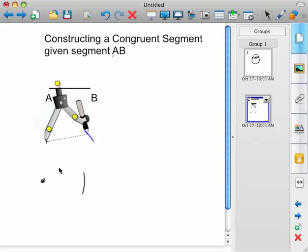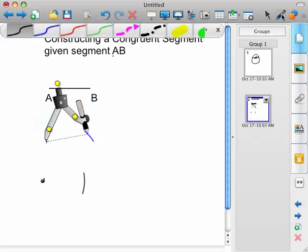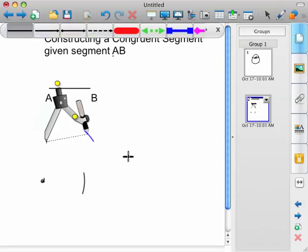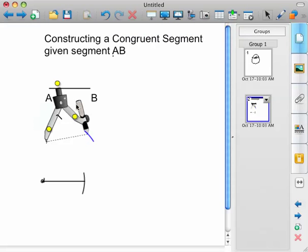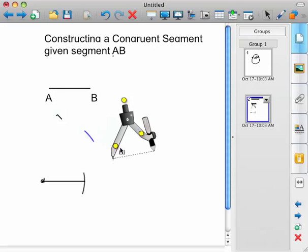Then I'll connect that line. We'll connect to where I made the mark and now those two segments are congruent. We could call that A prime B prime.